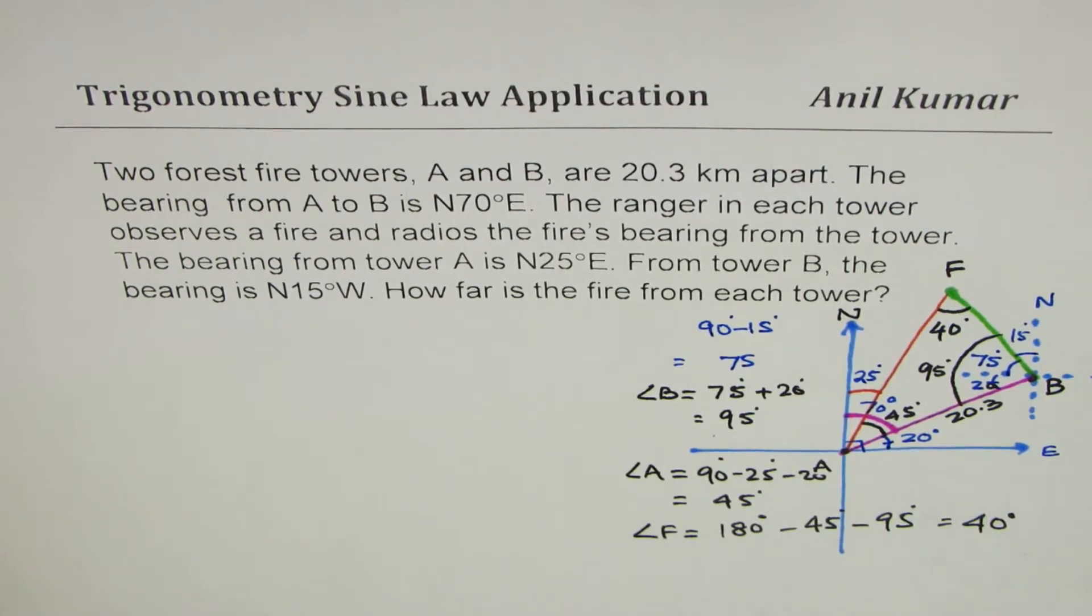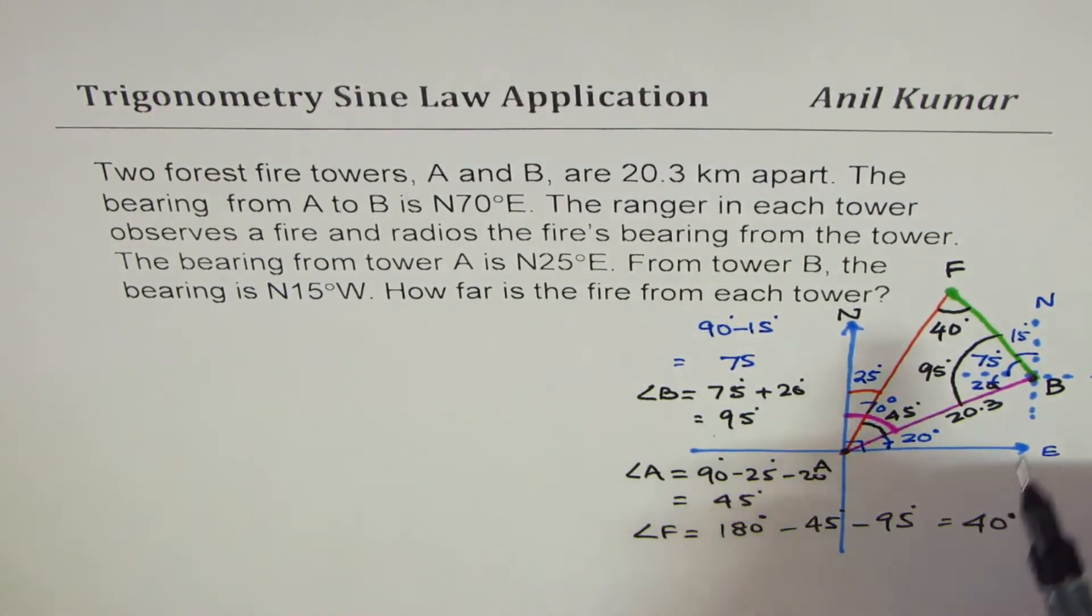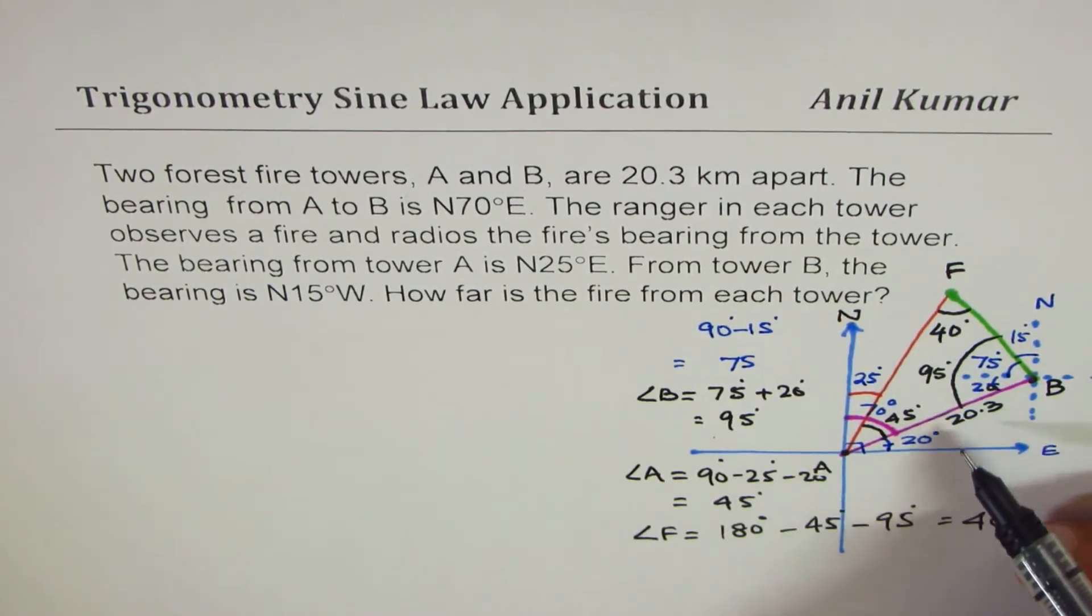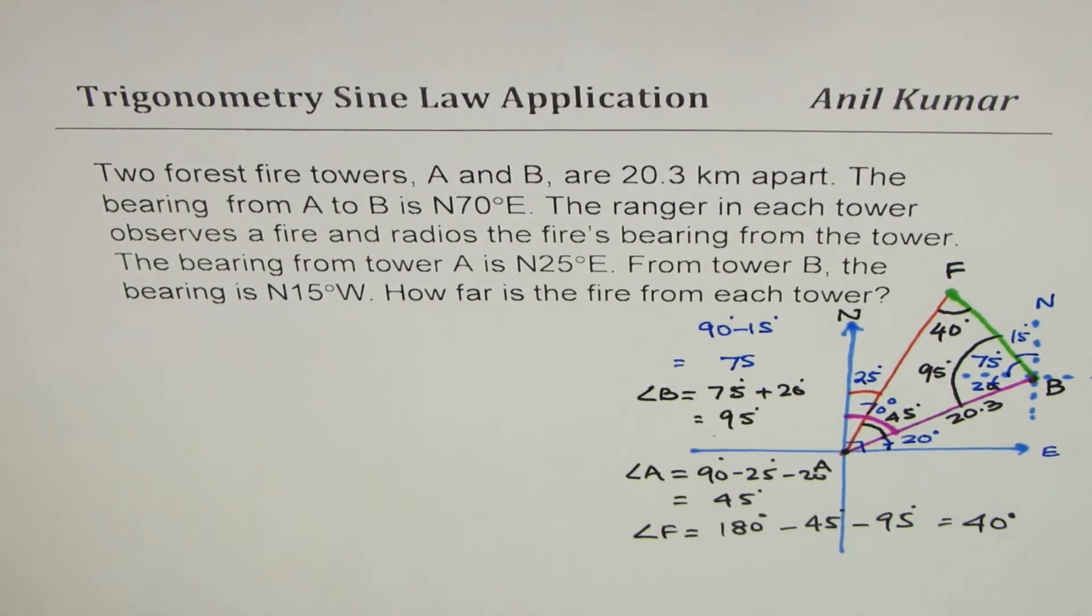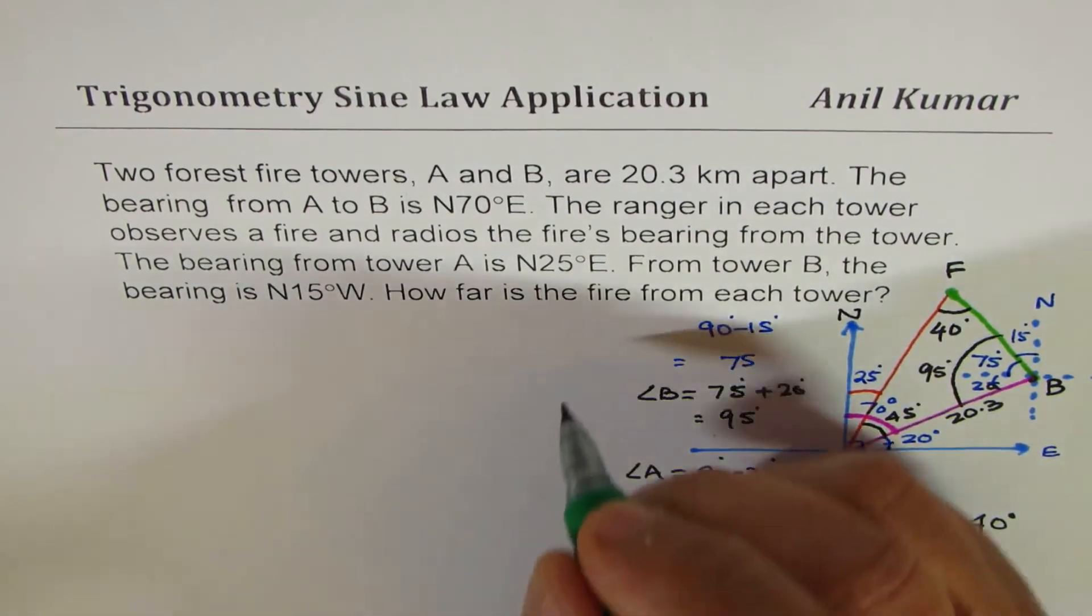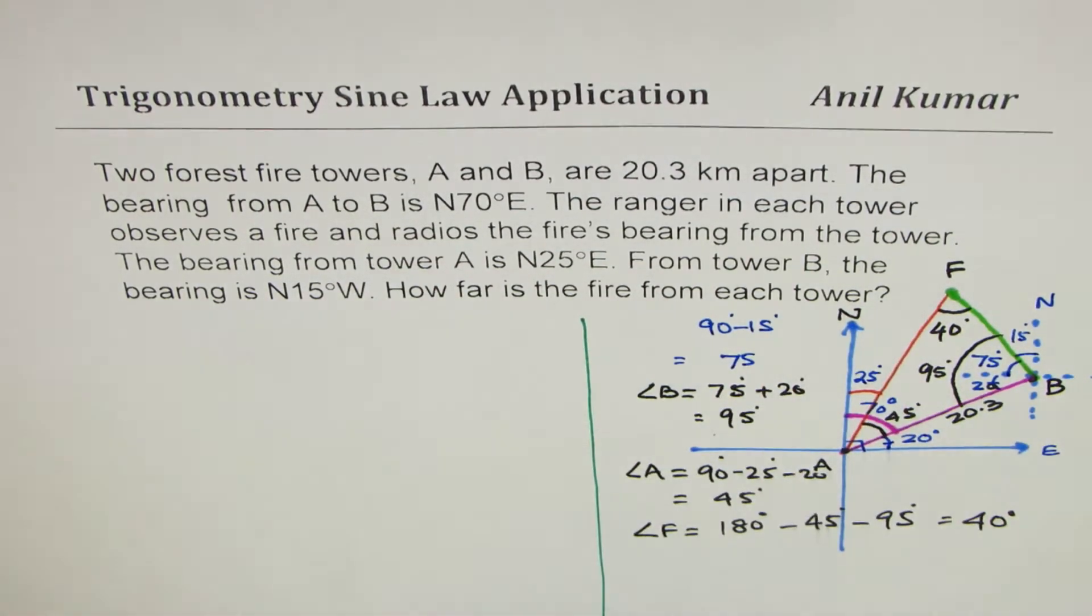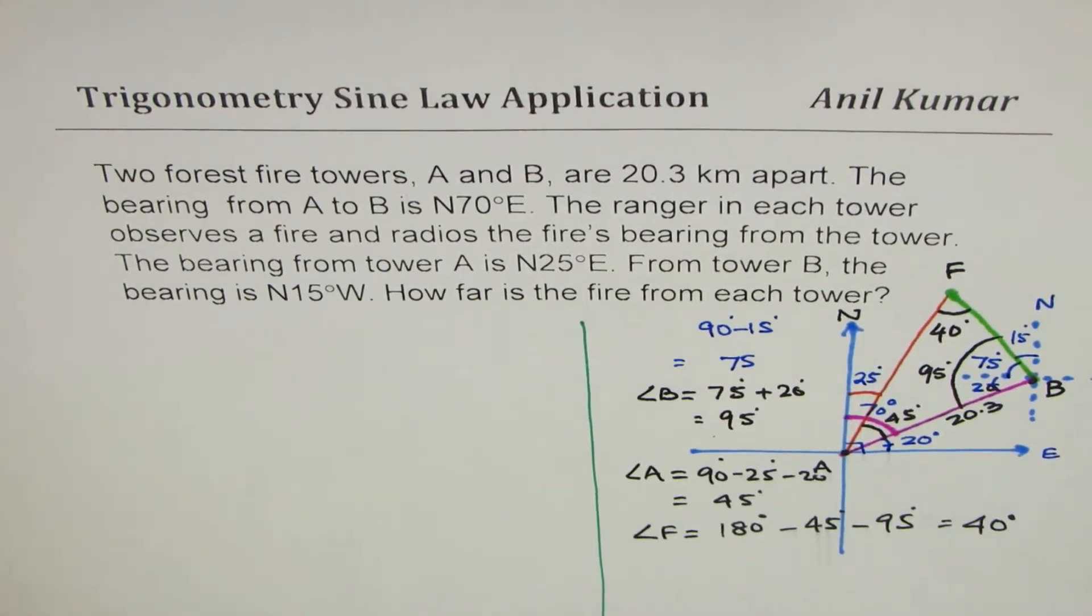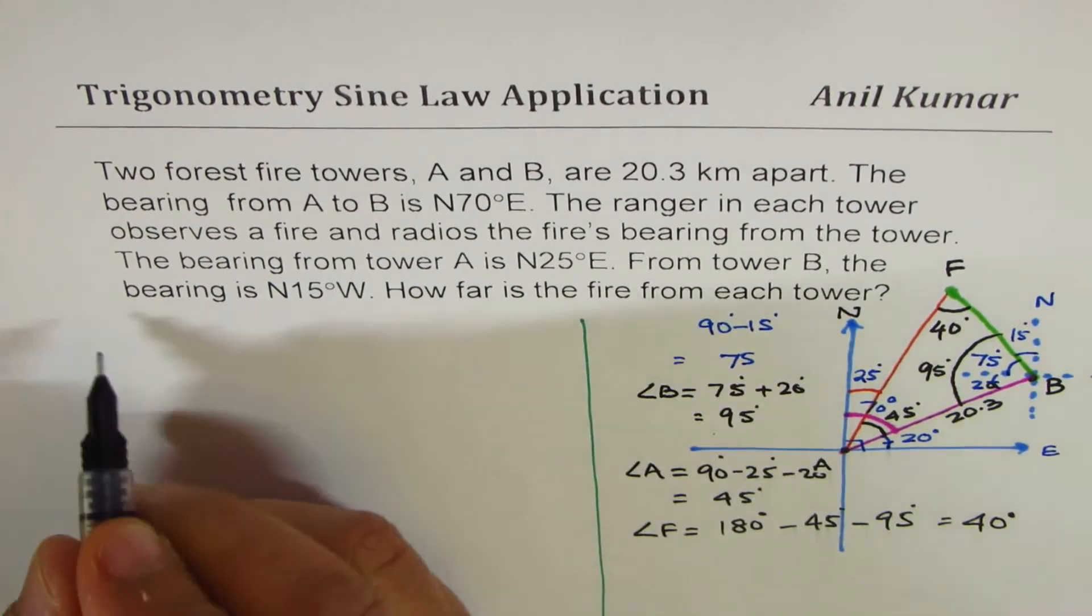Once you know a combination of angle and opposite side, you can use sine law. So now we'll apply sine law and find the distance of the fire from the towers. So let's apply sine law.